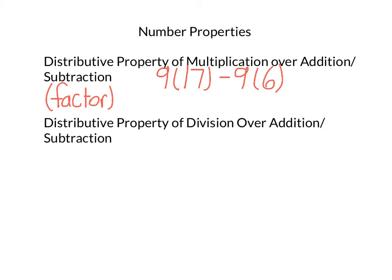Again, with subtraction, so this would still be officially the distributive property of multiplication over subtraction, even though we're really factoring. I see a common factor of 9, so I can bring out the 9. And what's left is 17 minus 6. And I would do that because I can see that that's going to be 9 times 11. And that's going to be much easier to do than 9 times 17 and subtract 9 times 6 from it. So, 99.